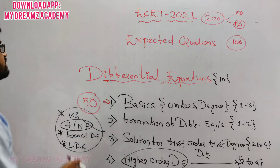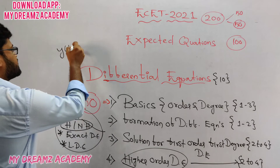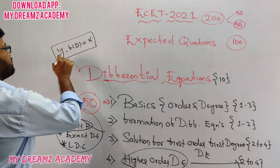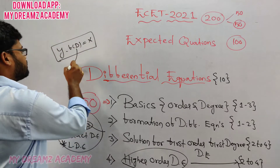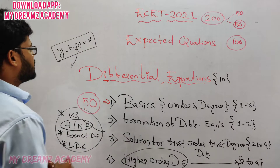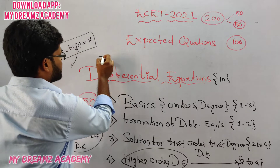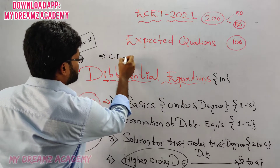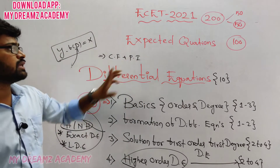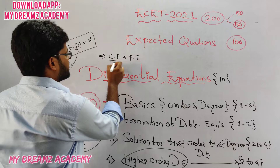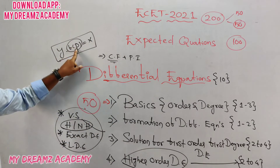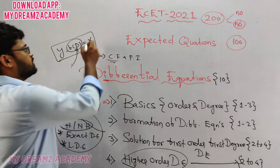Higher order differential equations are of the form Y into F of D equals X. The solution contains complementary function plus particular integral. The complementary function depends upon the roots of the auxiliary equation, and the particular integral depends upon the value of X.